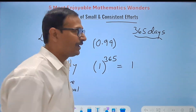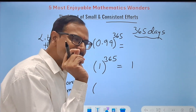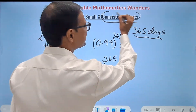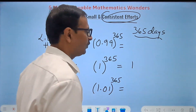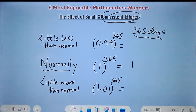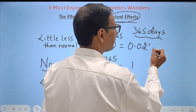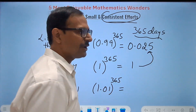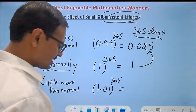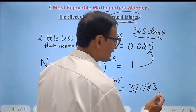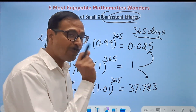0.99 raised to 365 gives just 0.025 — your performance nearly vanishes! But 1.01 raised to 365 — increasing effort by just 0.01 consistently — gives 37.78. Think about that: a tiny consistent reduction destroys your output, while a tiny consistent increase multiplies it nearly 38 times. This is the mathematical power of small, consistent efforts.